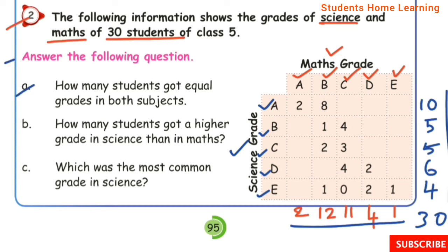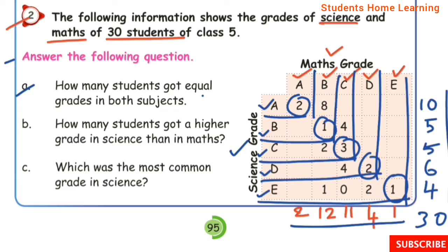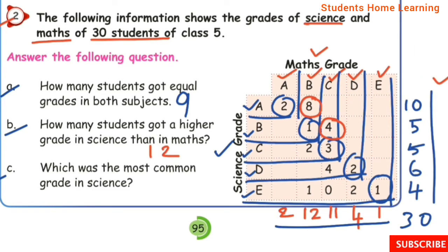Answer the following questions. First: How many students got equal grade in both subjects? Equal grades — A: 2, B: 1, C: 3, D: 2, E: 1. Adding: 2+1=3, 3+3=6, 6+2=8, 8+1=9. Answer: 9 students got equal grades. Second: How many students got a higher grade in Science than in Maths? Answer: 12. Third: Which was the most common grade in Science? Answer: A.